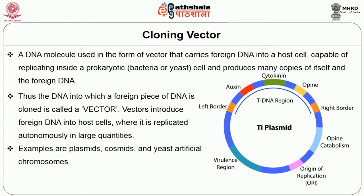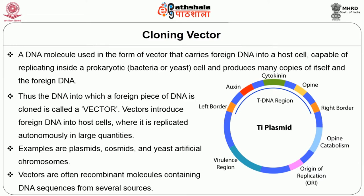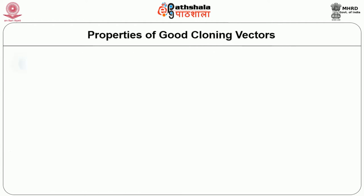An example of a vector is a plasmid, and you can also include cosmids and yeast artificial chromosomes. Vectors are often recombinant molecules containing DNA sequences from several sources. So what are the properties of a good cloning vector?